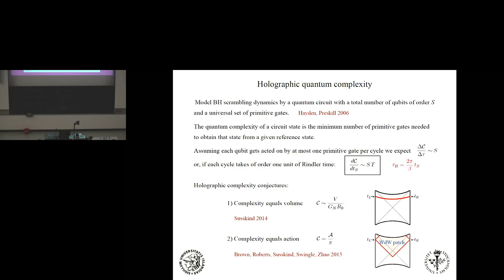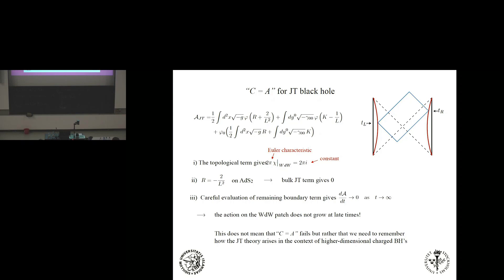The two conjectures I want to try out are: first, complexity equals volume from Susskind, where the complexity is calculated by finding a time slice between the boundaries of a two-sided ADS black hole Penrose diagram and maximizing its volume. And then there's a second conjecture involving a more refined calculation. Restricting to the one-plus-one-dimensional theory per se, without embedding it in a higher-dimensional context, it simply fails. But that's perhaps not what you want to do. This theory is the effective description along the long throat of a near-extremal black hole.